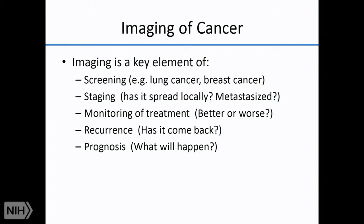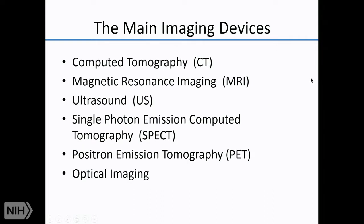We use imaging for staging and monitoring of treatment, and then after treatment for recurrent disease and establishing prognosis for the patient. The main imaging devices we use are computed tomography (CT), magnetic resonance imaging, ultrasound, single photon emission computed tomography, positron emission tomography, and optical imaging. We'll talk about each of these in turn, describing both their strengths and their limitations.